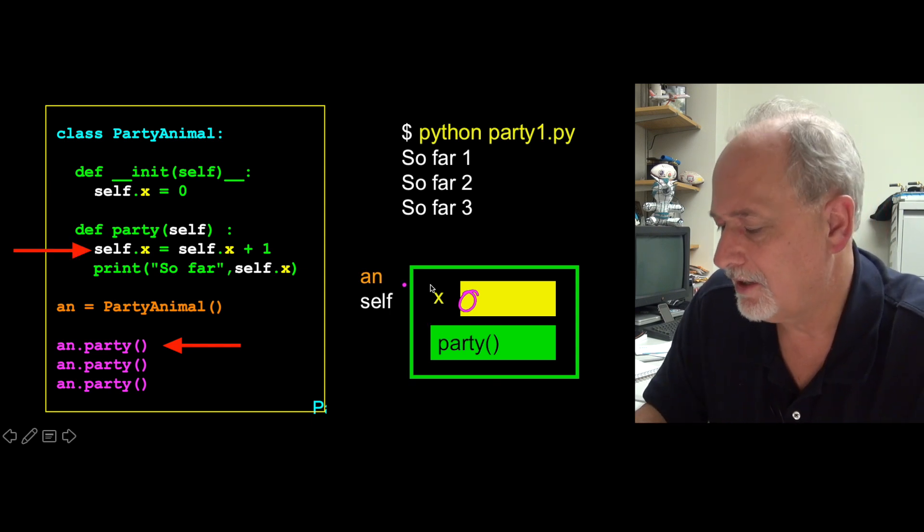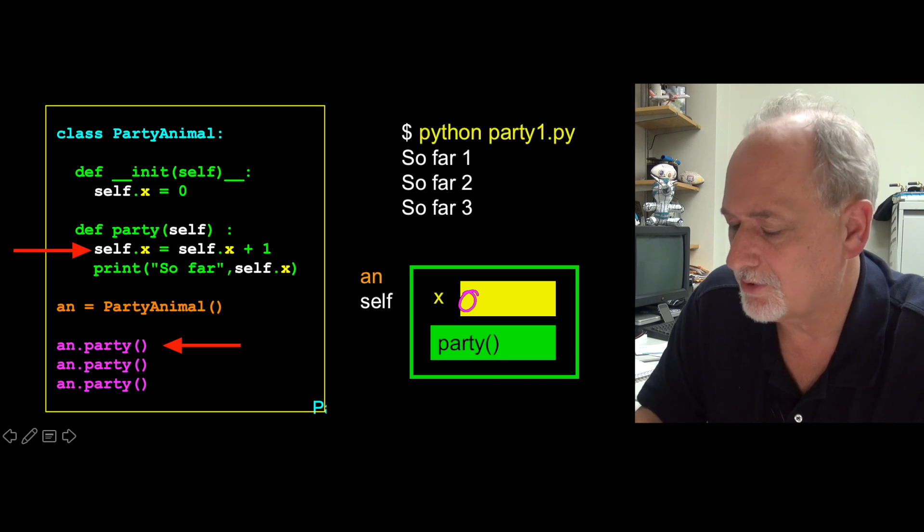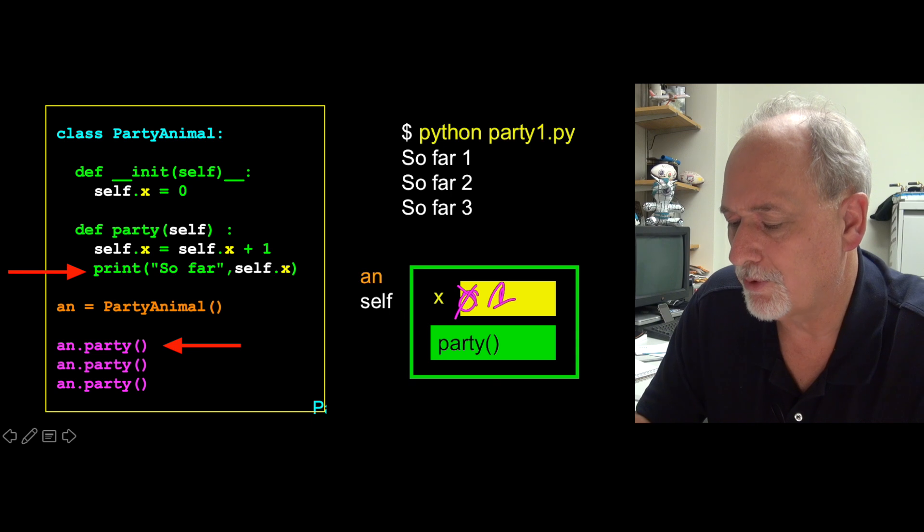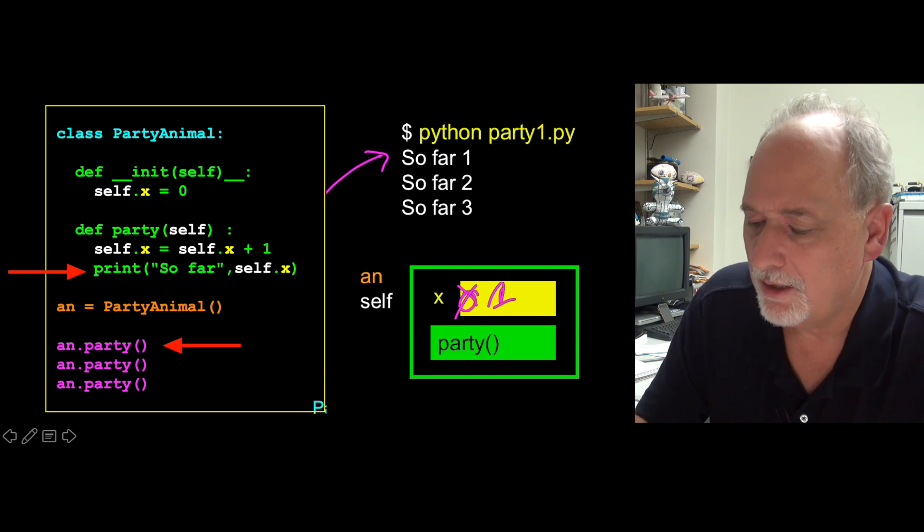And now it looks up self.x, which is zero, adds one to it. And so this becomes one. And then we print so far, so far one. And then the code returns and it goes down and does it again.